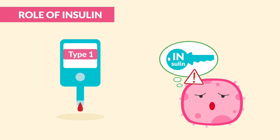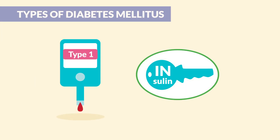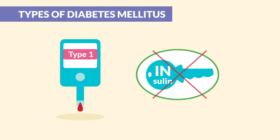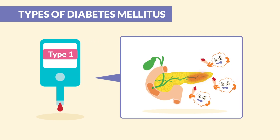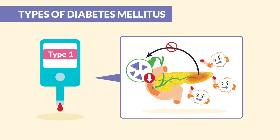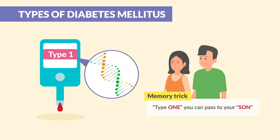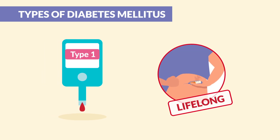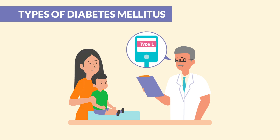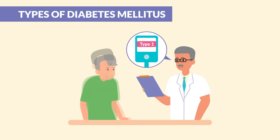In diabetes, insulin is the problem. In type 1, we have none. Type 1 diabetes is an autoimmune disease that causes the body to attack itself, killing its own pancreas — therefore, no insulin is produced. Type 1 is genetic, so think you can pass it on to your son with type 1. Clients with type 1 are insulin-dependent for life, and typically type 1 is diagnosed in childhood, but diagnosis can occur at any age.